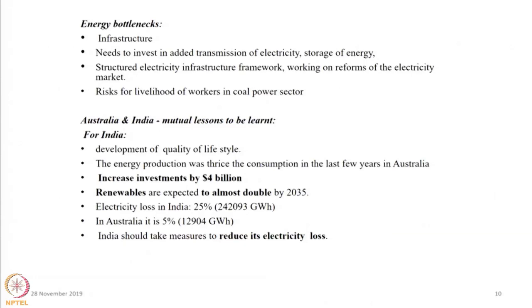For India, the development of lifestyle is very important. The reason is that per capita energy consumption in India is less compared to Australia, which shows that life quality is supposed to be improved. Investment in renewable energy generation should also be improved, as Australia is improving day by day. The electricity loss in India is 25 percent whereas in Australia it is just 5 percent, showing that India needs to focus more on saving electricity. Per capita CO2 in Australia is huge, so diversification of fuels is also something they should take care of.